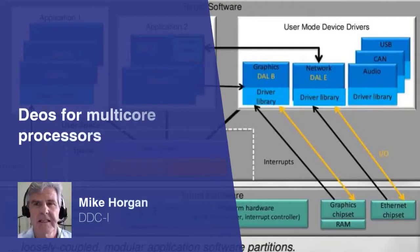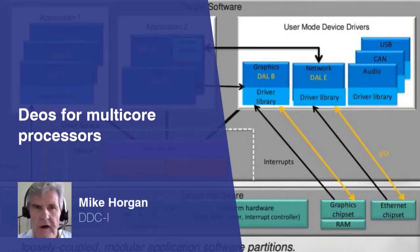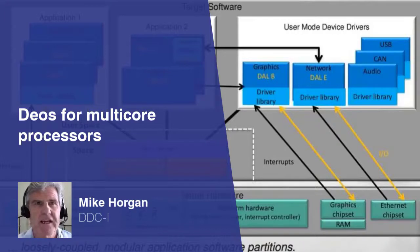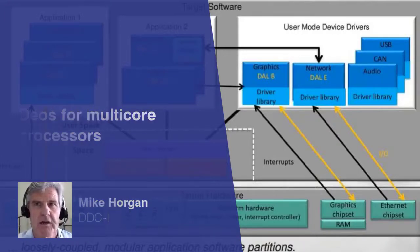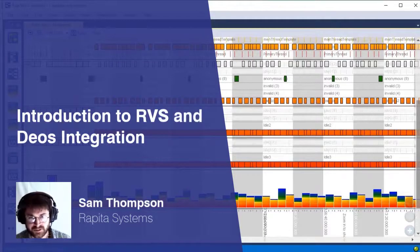The DEOS kernel is a module; it is dynamically linked at runtime with all your other components and software to provide the functionality of the system to meet your system requirements. The binary DEOS registry, depicted in orange, is the set of rules for space and time partitioning established by your integrator, and this is completely out of the box with DEOS.